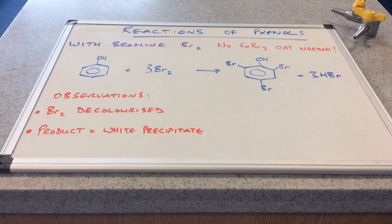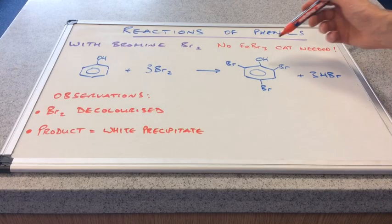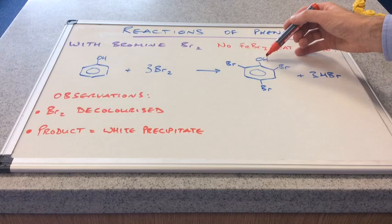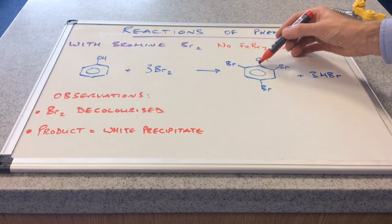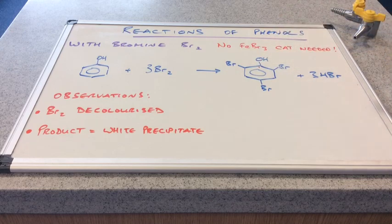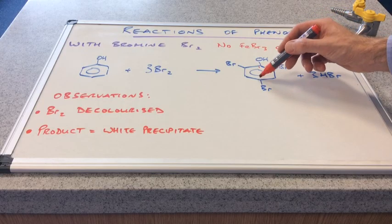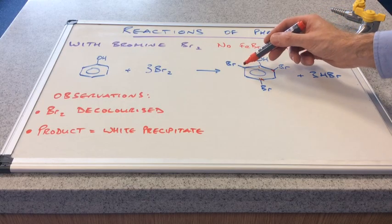We'll go on to naming the product now. Remember, we said this a few slides ago. The OH group makes this carbon number 1. So that means that's carbon number 2, 3, 4, 5, 6.